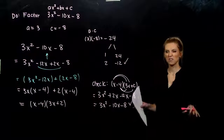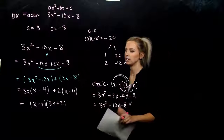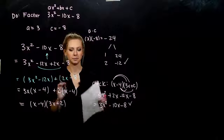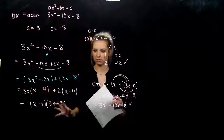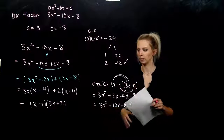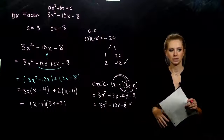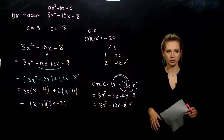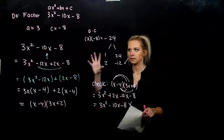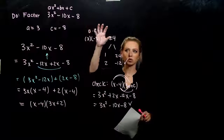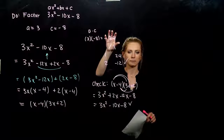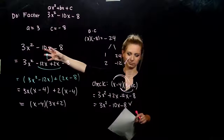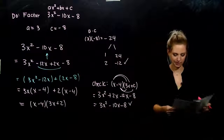So instead of having to try a whole bunch of different combinations, we design it to work — to be a factoring by grouping problem. And it'll get better with practice. What are we doing? Taking A and C, multiplying them together, breaking it up, and then rewriting our middle term. We'll practice some more. Let's look at another one.